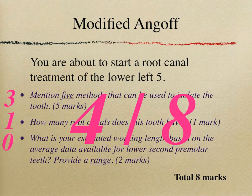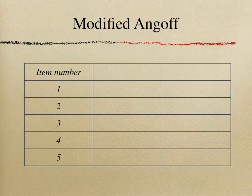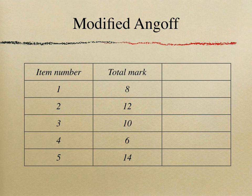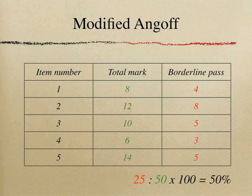Adding the marks a borderline candidate can gain: three plus one equals four out of eight for that item. If the paper has five short answer questions — the first worth eight marks, the second twelve, and so on — and you estimate the marks a borderline candidate earns from each, you sum them up. In this example the total is 25. Dividing 25 by the total possible marks of 50 and calculating the percentage gives a pass mark of 50% for that paper.